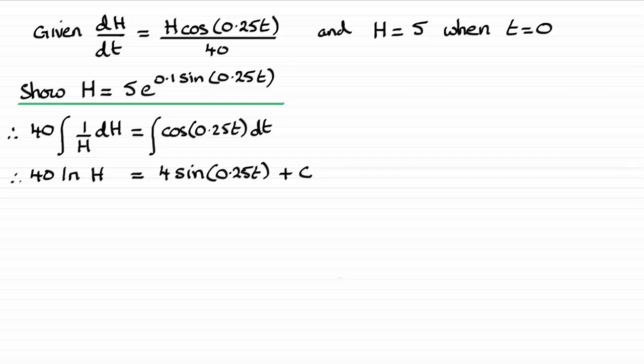Now I'm going to work out what that constant C is by putting these boundary conditions in. So let's just say we call that 1 and we've got our equation here 2. So just going to say sub 1 in 2 and that will allow us to find our constant C.